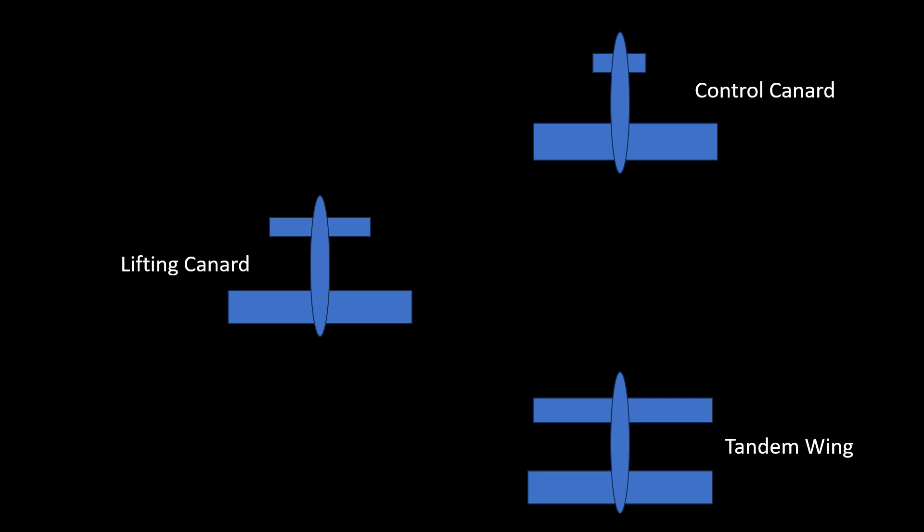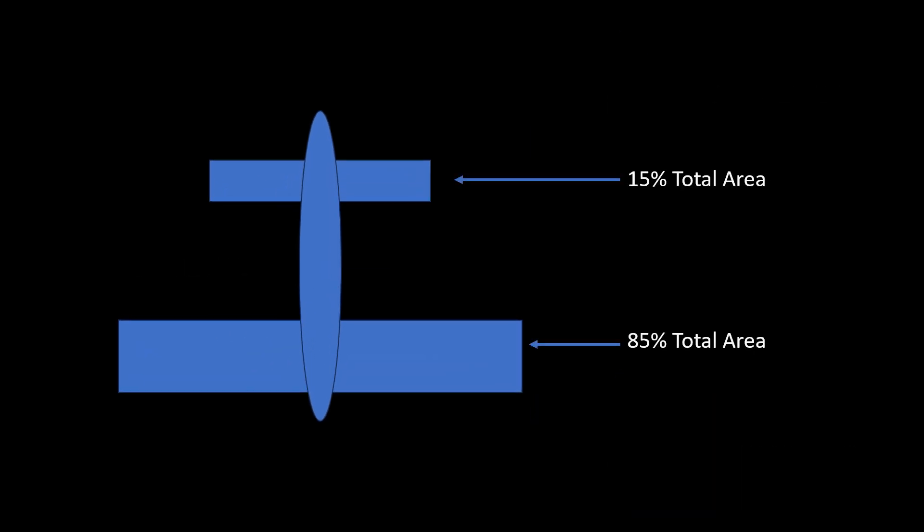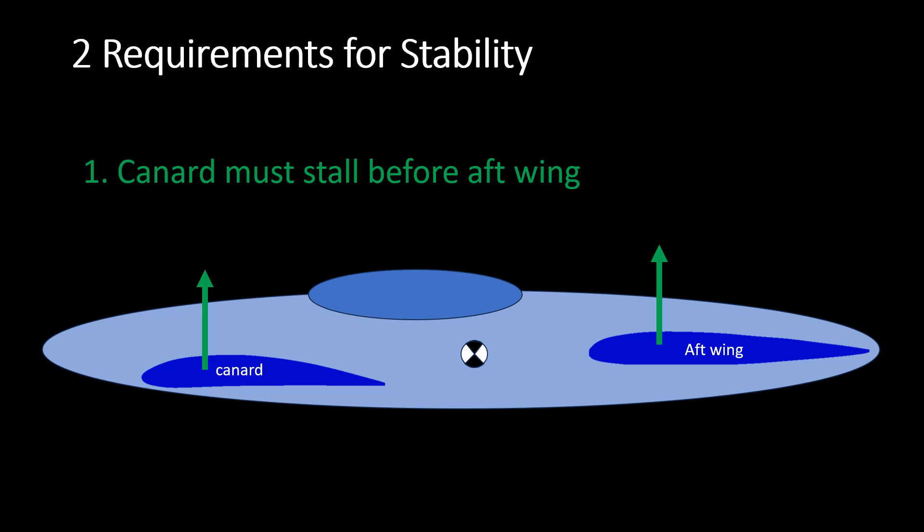As an example, suppose you give 15% of the total area to the canard and the rest, 85%, is the wing area. There are two main requirements for pitch stability of canard airplanes. First is that the front wing must stall before the aft wing.